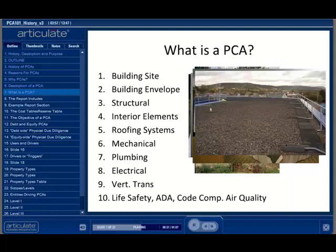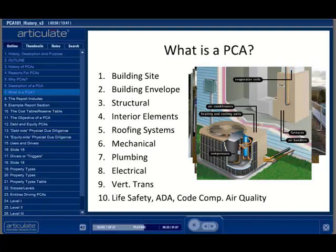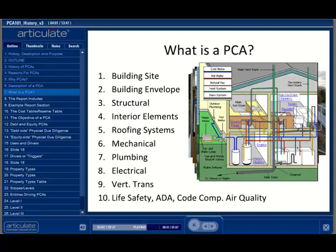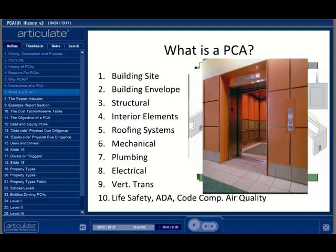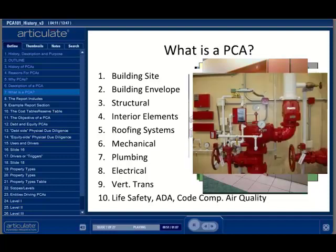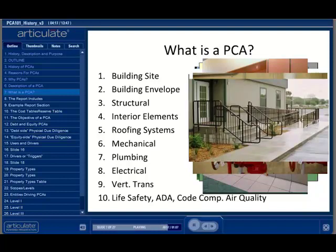The roof is assessed. The HVAC system is reviewed. Plumbing is examined, as well as electrical. If a building has elevators, escalators, or moving walkways, they are assessed. Lastly, a PCA professional may examine code compliance, life safety, accessibility, air quality, and some other considerations. However, some of these are outside the scope of the ASTM E-2018 Standard.